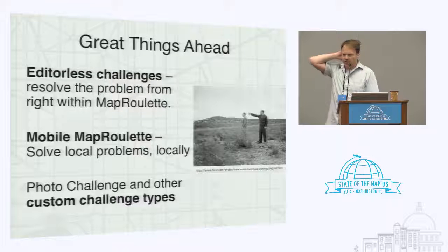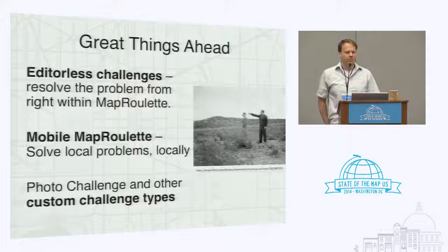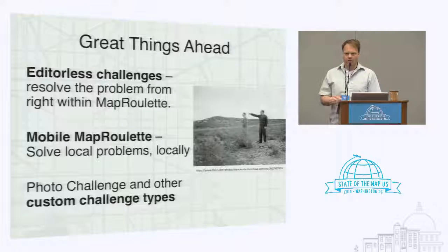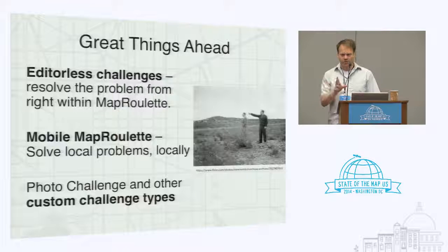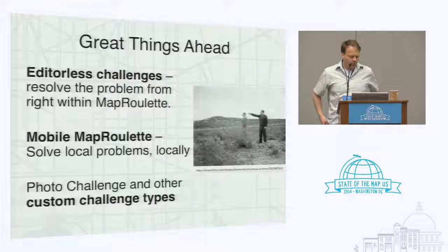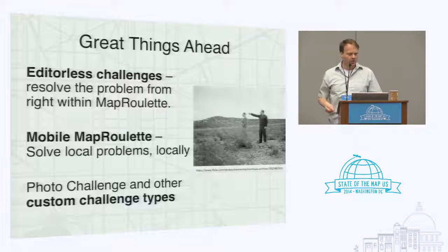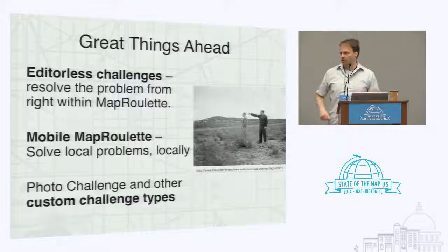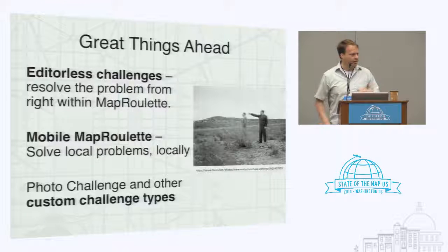Some ideas we have to improve MapRoulette down the line: going editor-less — fixing things directly in MapRoulette, not making it another full OSM editor, but just asking simple questions about objects, like 'is this right or is this wrong?' and if you say it's wrong, OpenStreetMap will do something to it right away. Also custom challenge types that may not look anything like what you see today — for example, show people a photo taken at a specific point and ask them to open their editor and map what they see in the picture. And there's Mobile MapRoulette. This is all pretty far-off stuff, but these are ideas we have to improve.